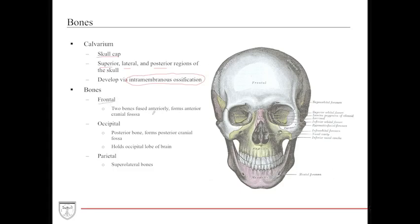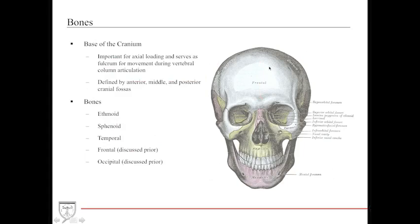The bones that make up the calvarium include the frontal bone, composed of two unique bones fused anteriorly, which helps form a significant portion of the anterior cranial fossa. Then you have the occipital bone, which houses the occipital lobe of the brain and forms the posterior cranial fossa. Then the parietal bone — the superior lateral portion of the skull, and the region where men often start to bald. The base of the cranium is where the anterior, middle, and posterior cranial fossae meet the vertebral column and other soft tissue structures, where a lot of loading, angulation, and rotation of the skull occurs.